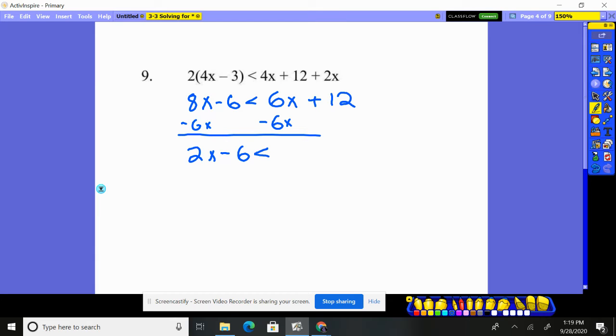2x - 6 < 12. Move the number over to be with its buddy, the other number. 2x < 18. Divide by 2. x < 9 would be the solution.